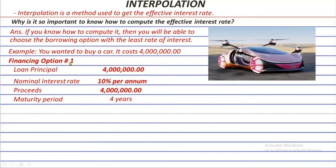The first option is you can borrow a loan with a principal of 4 million. Aside from the 4 million principal, you have to pay 10% interest per year for 4 years, which is the maturity term. If you choose this borrowing option, you are guaranteed to receive immediately a proceeds amount of 4 million, which is the amount you need to purchase this car.